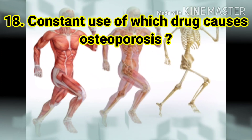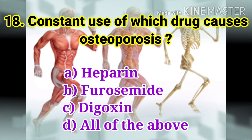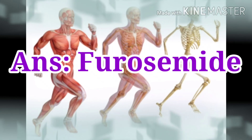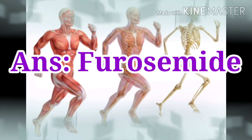The next question: the constant use of which drug causes osteoporosis? The options are heparin, furosemide, digoxin, and all of the above. The answer is furosemide. The constant use of furosemide causes osteoporosis mainly due to increased urinary excretion of calcium, leading to a long-term negative calcium balance.